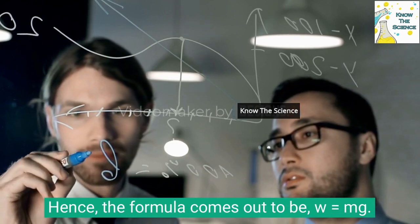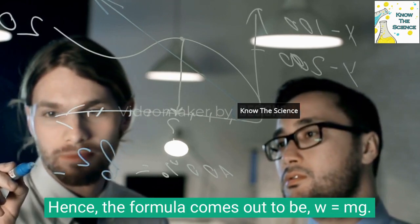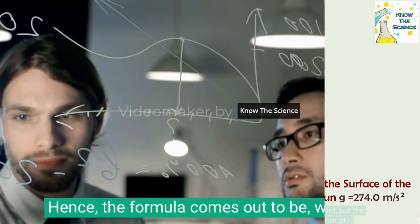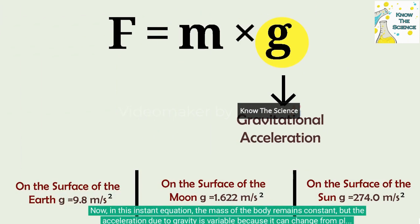Hence, the formula comes out to be W equals mg. Now, in this equation, the mass of the body remains constant, but the acceleration due to gravity is variable because it can change from place to place.